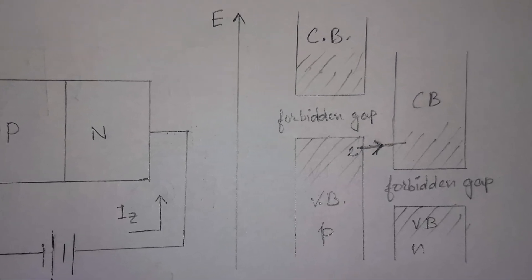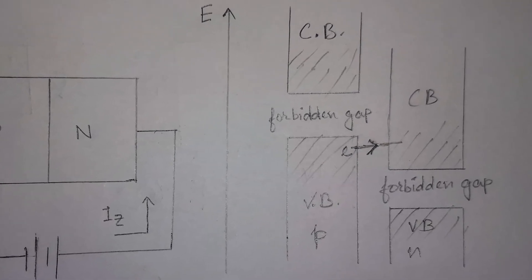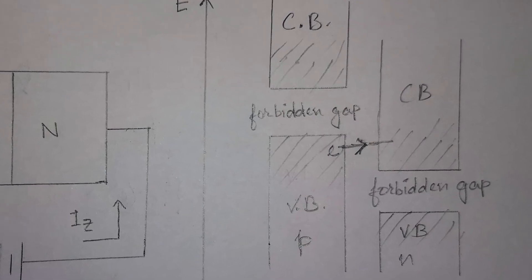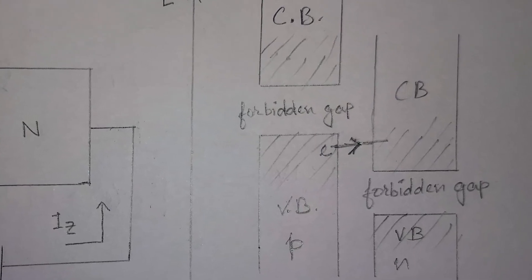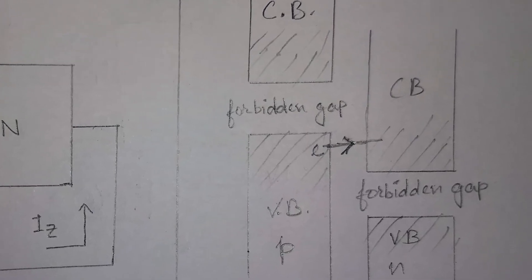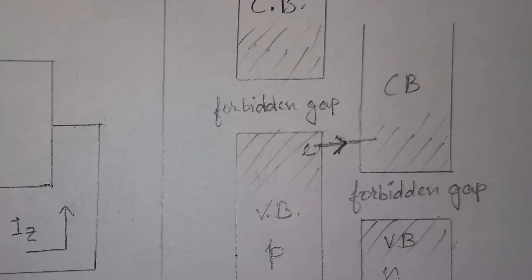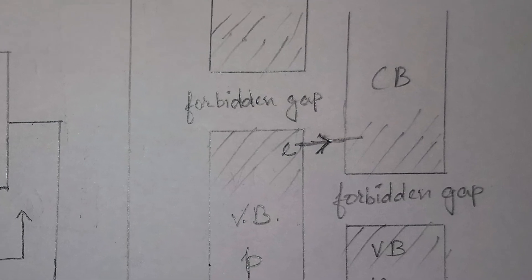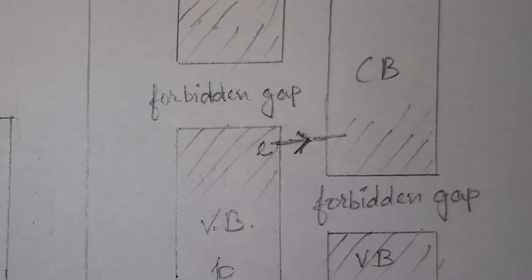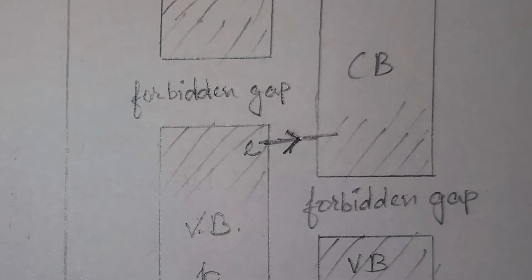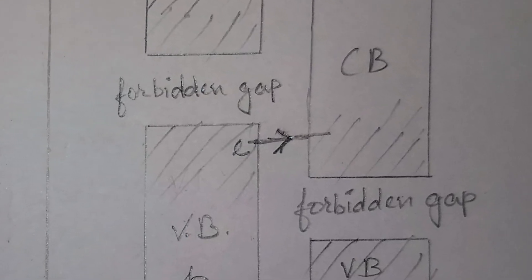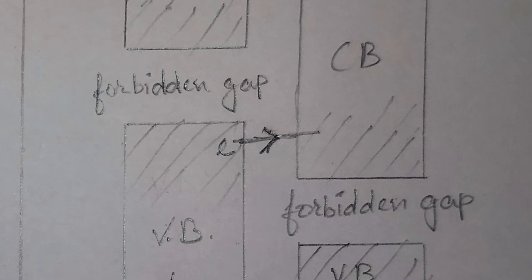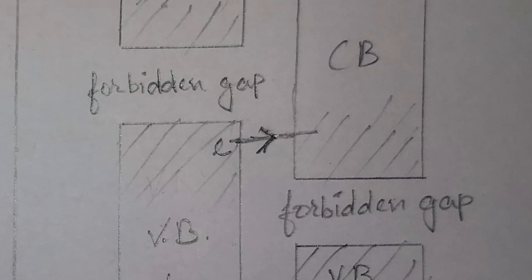At the atomic level, this tunneling corresponds to the transport of valence electrons into the empty conduction band, such that the breakdown voltage can be controlled quite accurately with the doping process. The tolerance is in the range of 5 to 10%.